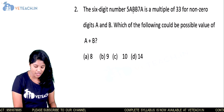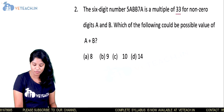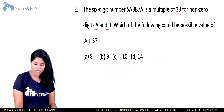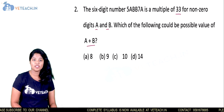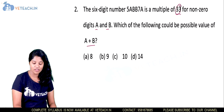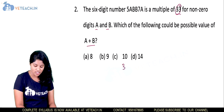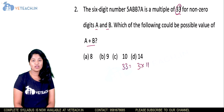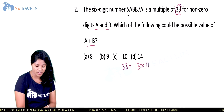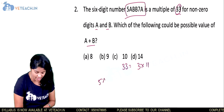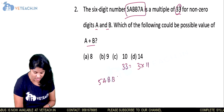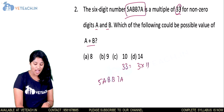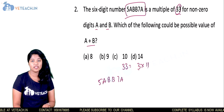A six-digit number 5abb7a is a multiple of 33 for non-zero digits a and b. Which of the following could be a possible value of a plus b? Since 33 can be written as 3 times 11, and 3 and 11 are co-primes, the number must be divisible by both 11 and 3.